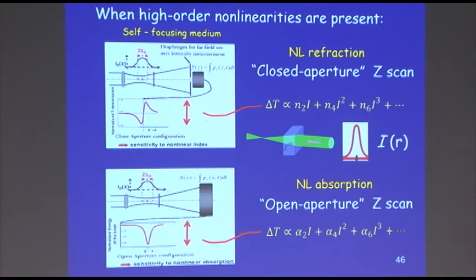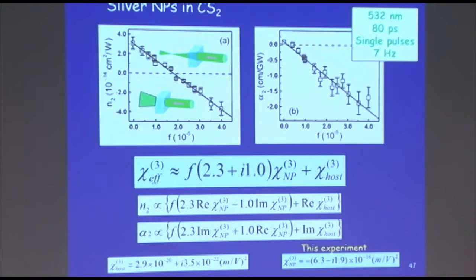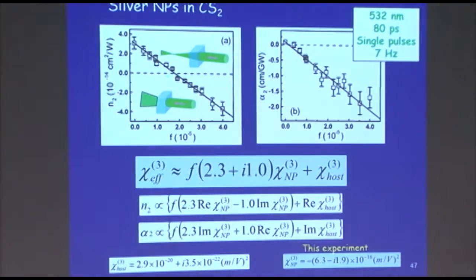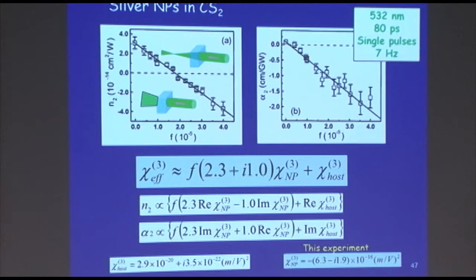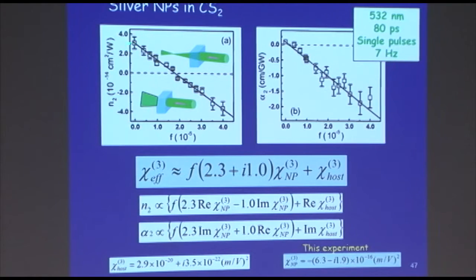Using this technique I can measure alpha-2, alpha-4, alpha-6 — any order. That's all I want to say about this technique; it's very popular now. Here is an example experiment with CS2 mixed with silver nanoparticles. What you see is that the value of n2, when I increase the silver particle concentration, goes from a positive value (self-focusing) to a negative value (self-defocusing), passing through zero. So at a certain concentration there is no effective third-order nonlinearity — Chi-3 effective is zero.